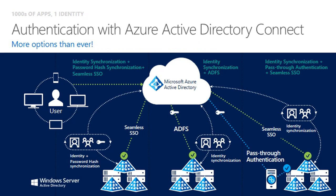Azure AD Connect now delivers three options, all with single sign-on and with passwords either residing in the cloud or on-prem environment. The new pass-through authentication option provides a much simpler way for password validation against on-prem AD without passwords needing to be in Azure AD.